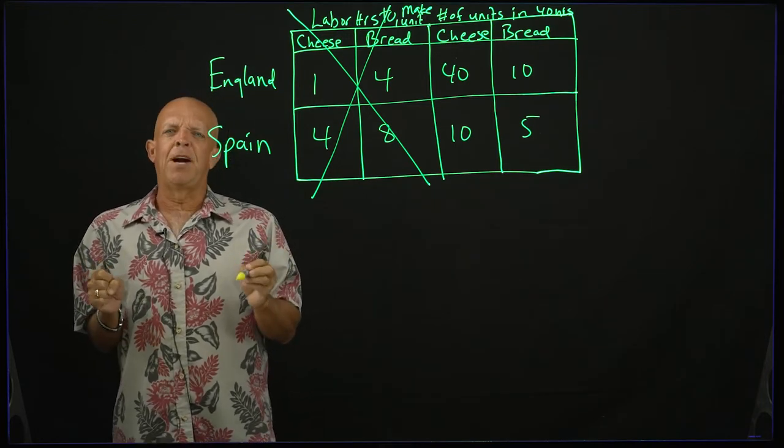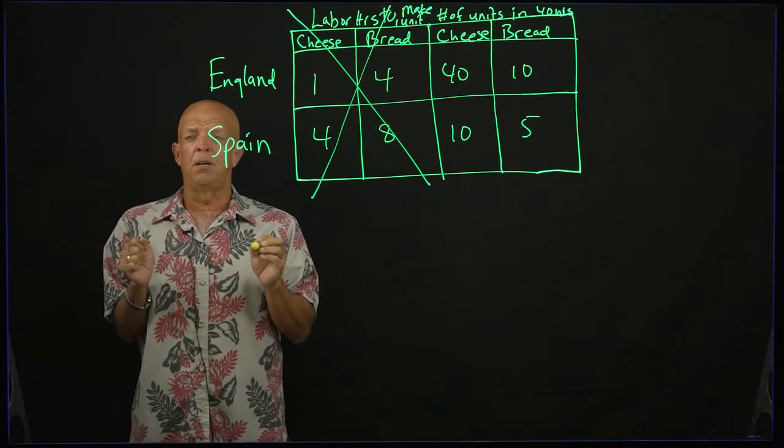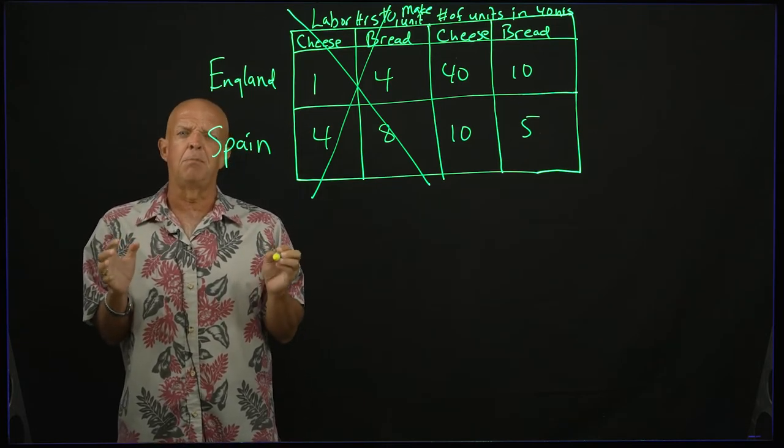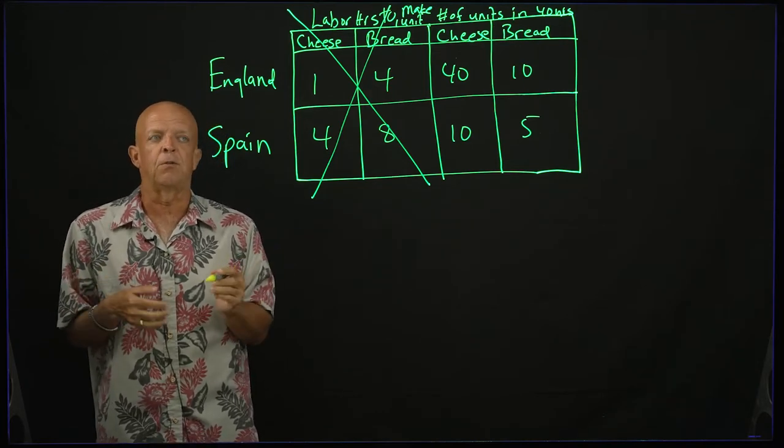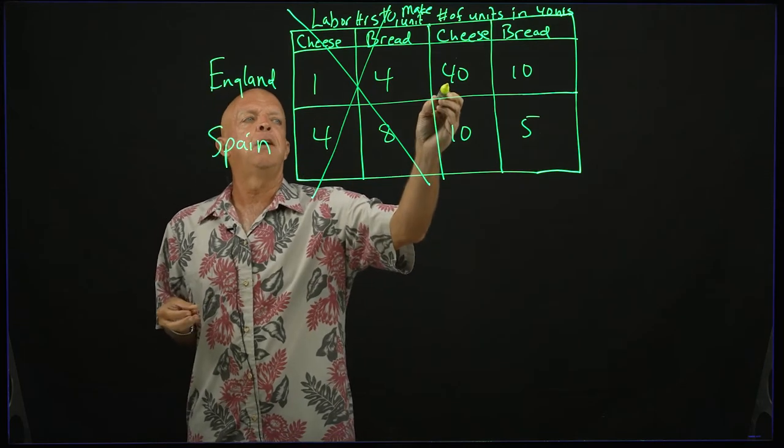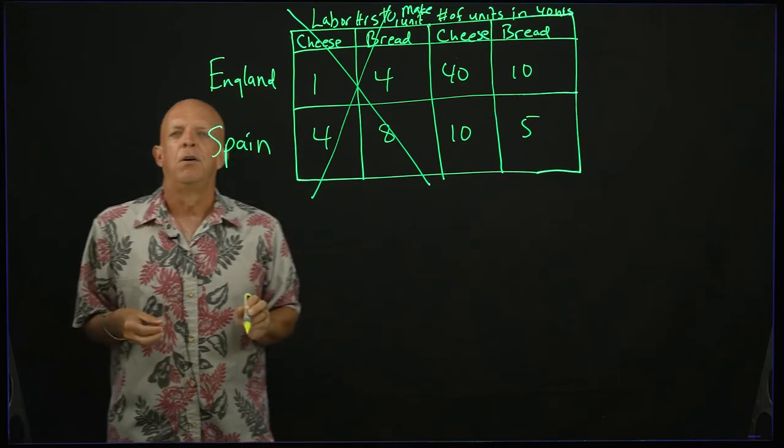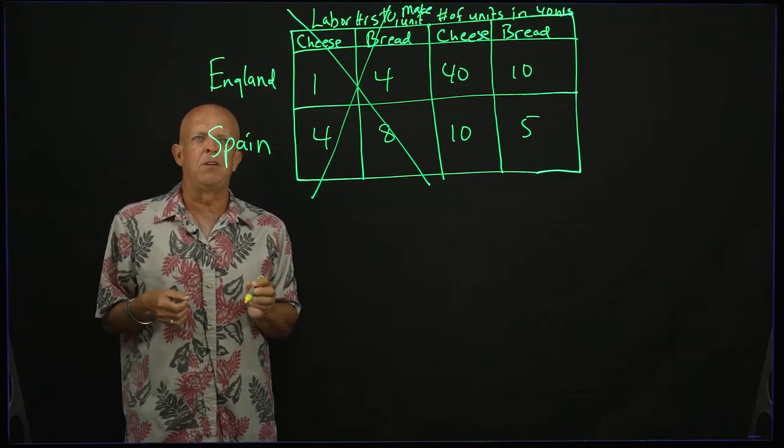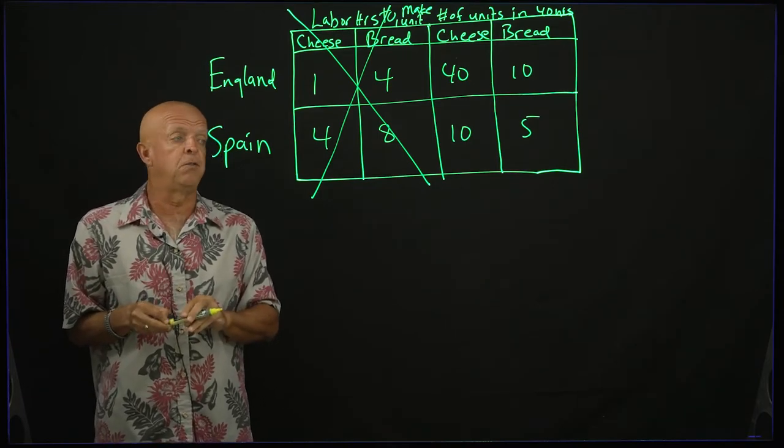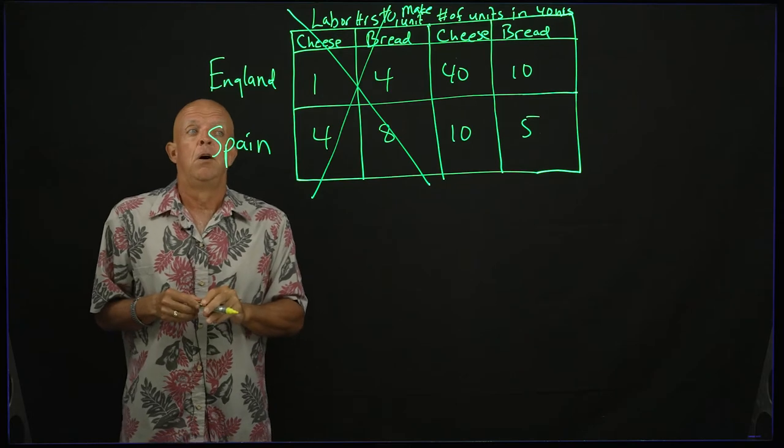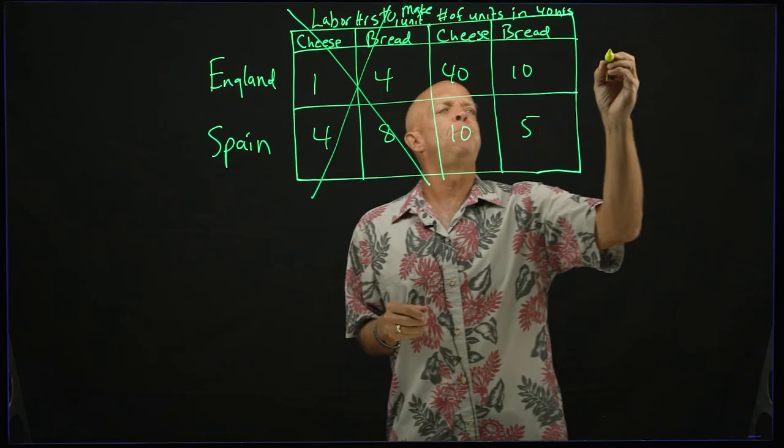And what you should realize is the distinction between comparative and absolute advantage. Under absolute advantage, remember that it is the amount, the most amount of things that can be produced in a given amount of time, or the amount of time it takes, the fastest. In this case, England has an absolute advantage in both cheese and bread. So you don't really know if England should be producing just cheese and bread, or there should be some trade going on.